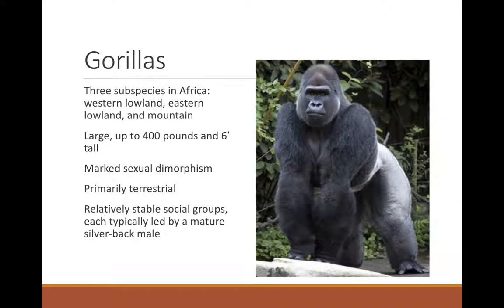Gorillas have four subspecies: western lowland gorillas — what we have at our zoo — eastern lowland gorillas, mountain gorillas (featured in the film Gorillas in the Mist about Dian Fossey, who was murdered because of her outspoken activism against poachers), and the Cross River gorilla, newly named in roughly the past two to three years, with fewer than 400 remaining. With 400 individuals, we're in dire straits and worried about loss of genetic diversity.